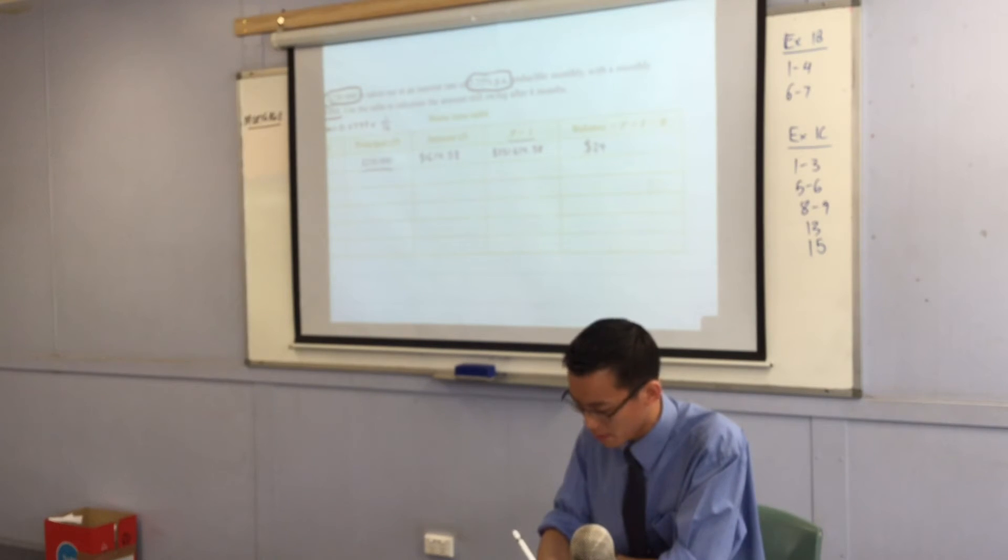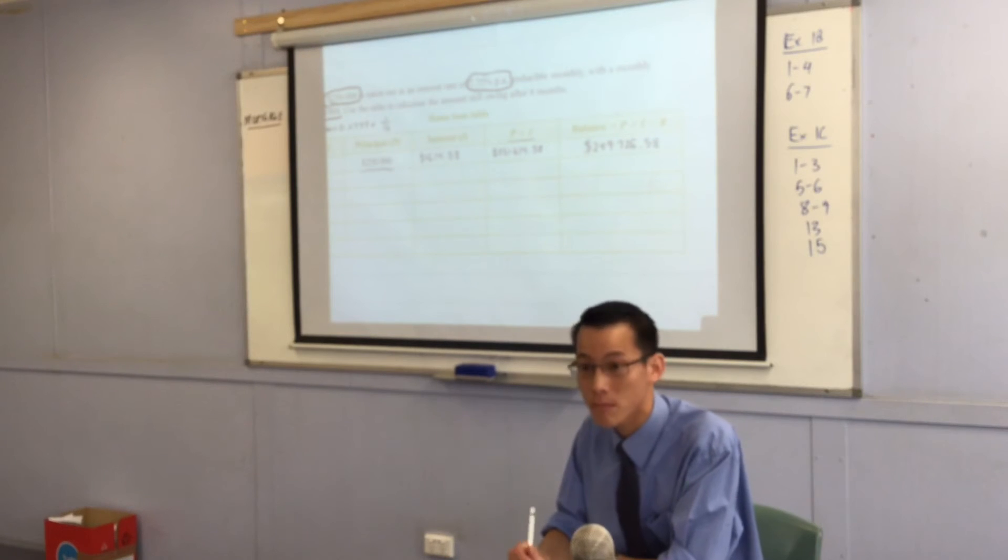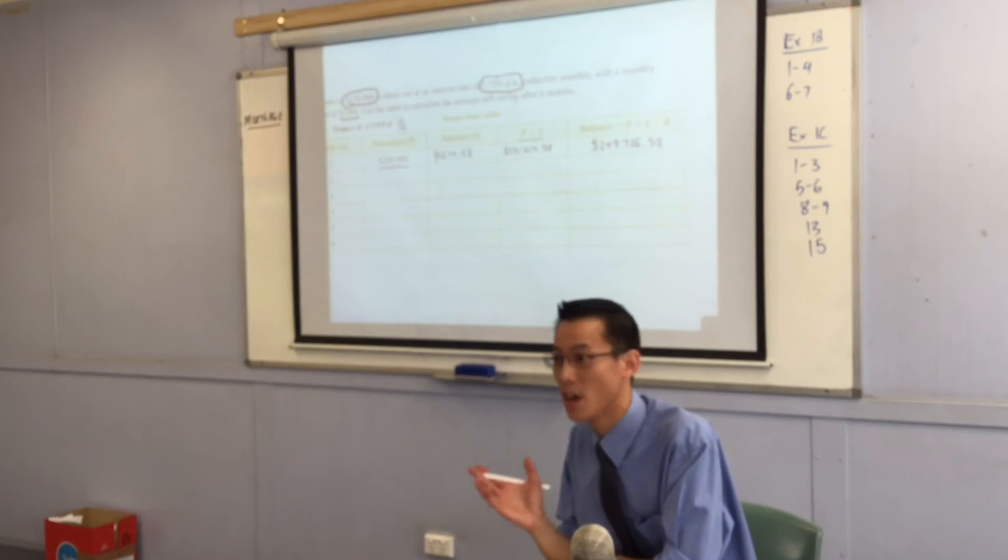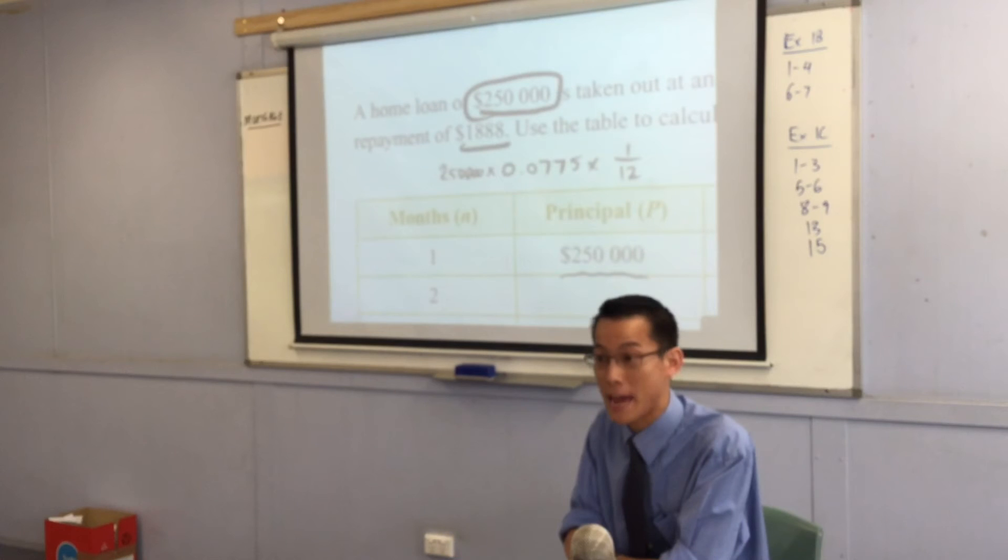I have this number. What do you think? Yeah, I've got that. Happy? No? Yes? No? No. I have subtracted $1,888. That was the repayment, right? Over there.